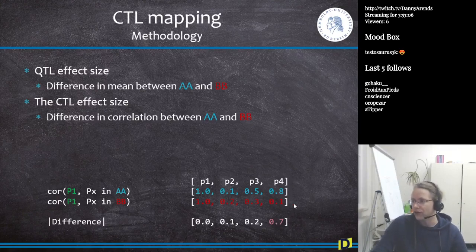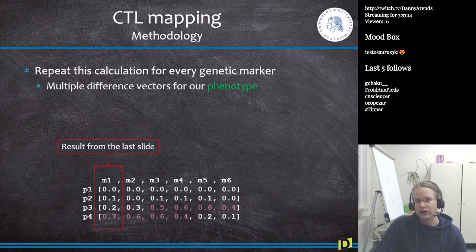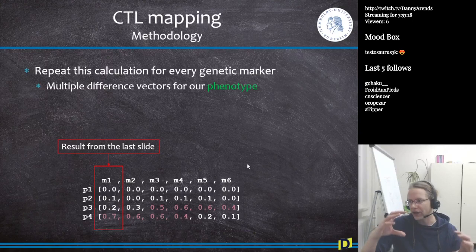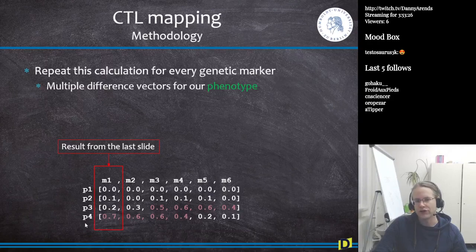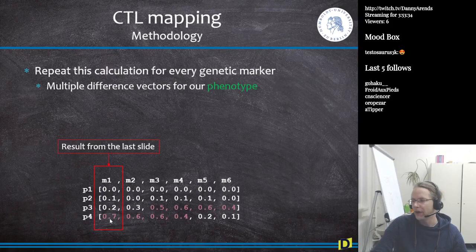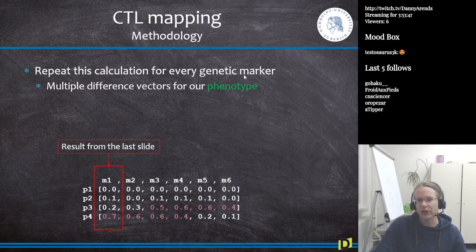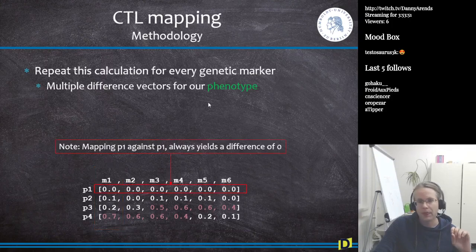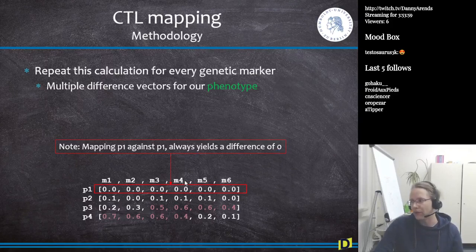We just subtract these two vectors from each other. The next step is to do all of the markers. I take the vector I just had and put it on its side — now we have the markers in the columns and the different phenotypes in the rows. You can check that it's 0.0, 0.1, 0.2, 0.7 — and indeed here you see the same thing. This is the difference vector for marker 2, for marker 3, for marker 4, and so on. We assume we only have six. I repeat this calculation for every genetic marker — multiple difference vectors for our selected phenotype. Of course mapping P1 against P1 will always yield a difference of 0.